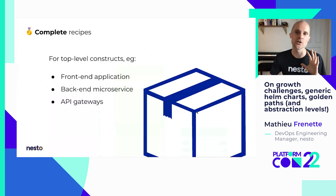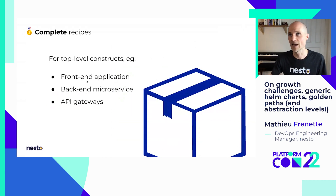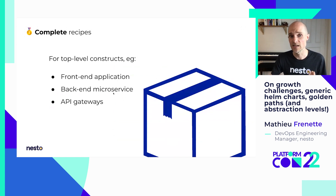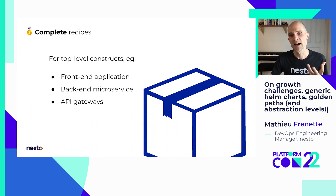Complete recipes are really for top-level constructs. In our specific case, those were: front-end applications — TypeScript applications with React — back-end microservices written in Go, and API gateways also written in Go with KrakenD. This is just in our case; in other companies it could be totally different.